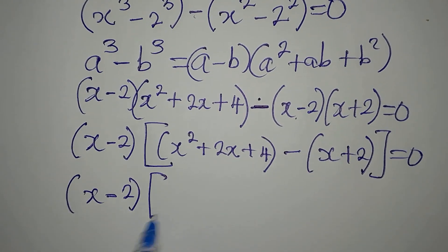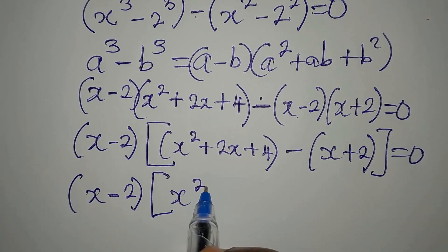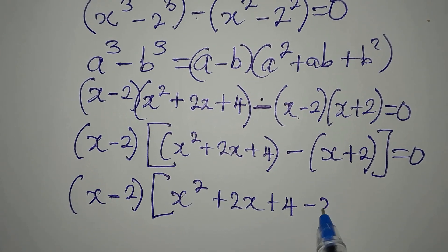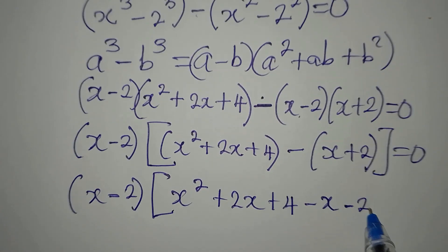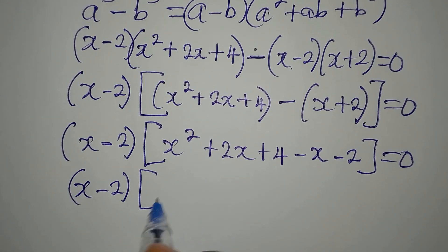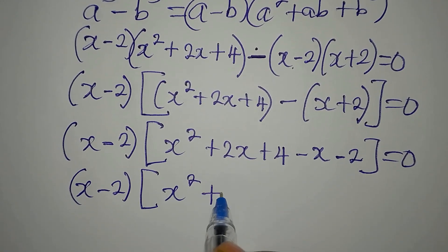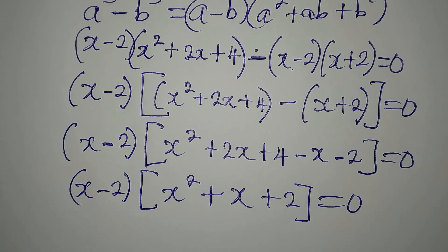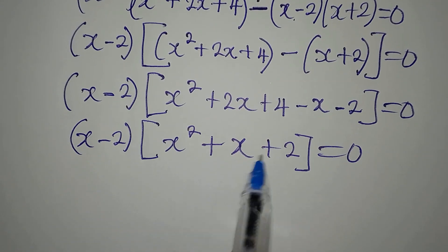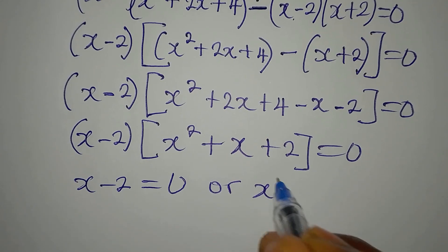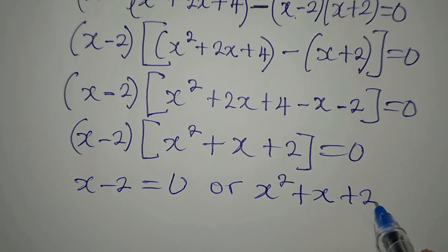The common factor (x minus 2) comes down, and inside we now expand: x² plus 2x plus 4, then opening the minus bracket gives negative x minus 2. Combining like terms: 2x minus x is x, and 4 minus 2 is 2. So we have (x minus 2)(x² plus x plus 2) equals zero.